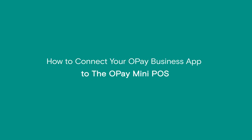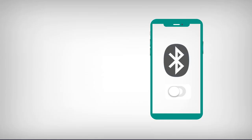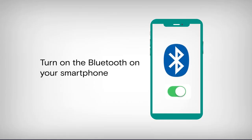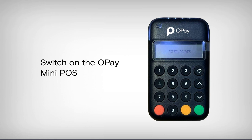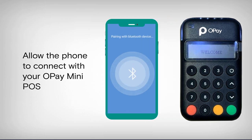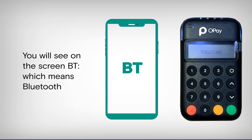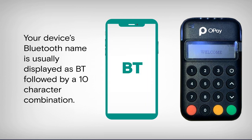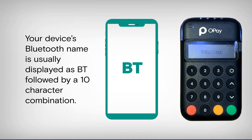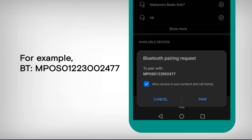How to connect your Opay business app to the Opay mini POS. Turn on the Bluetooth on your smartphone and switch on the Opay mini POS. Allow the phone to connect with your Opay mini POS. You will see the screen display "BT", which means Bluetooth. Your device's Bluetooth name is usually displayed as BT followed by a 10-character combination, for example: BT:MPOS0000123.